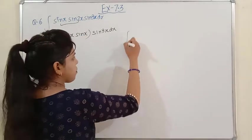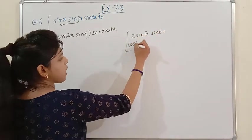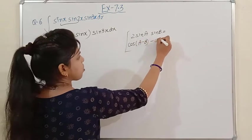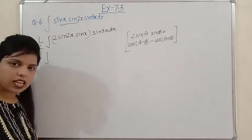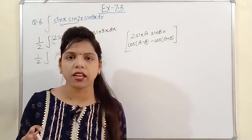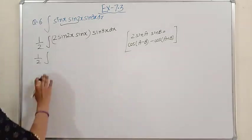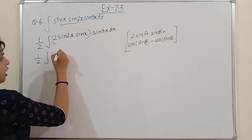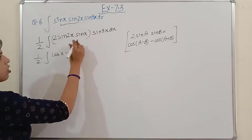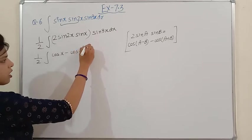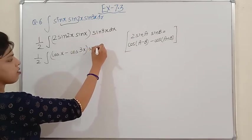The formula for 2sinA·sinB = cos(A−B) − cos(A+B), from Class 11 Chapter 3. For this exercise, you need both the basics and formulas of Class 11 Chapter 3. Using the formula: A=2x, B=x gives cos(2x−x) − cos(2x+x) = cosx − cos3x. This result is multiplied by sin3x dx.